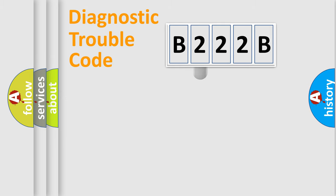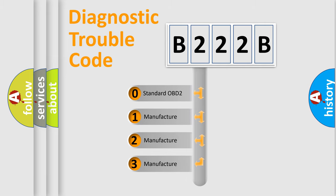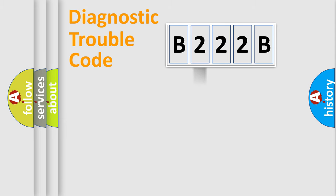This distribution is defined in the first character code. If the second character is expressed as zero, it is a standardized error. In the case of numbers 1, 2, or 3, it is a manufacturer-specific expression of the car-specific error.